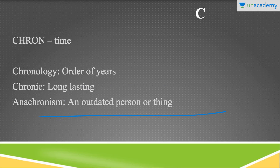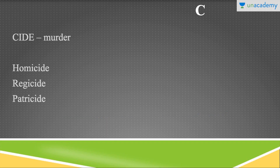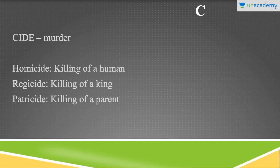Next is Cide — C-I-D-E — which means murder. The words we have are homicide, regicide, and patricide. Homicide means when you kill a human being. Regicide, which was prevalent in earlier times, is when somebody kills a king. Patricide means when you kill a parent — if a human being kills his or her own parent, that becomes patricide. If somebody else kills a person who is somebody else's parent, that is homicide because that person was not your parent.